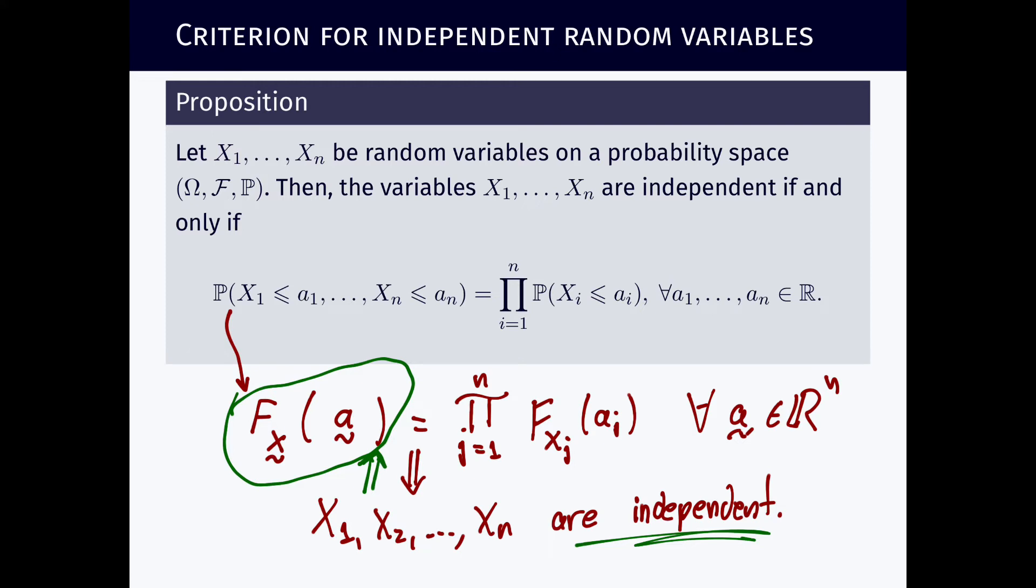Note that the expression for this function factorizes in order to conclude that they're independent, which is something which in principle was a much stronger property. And so again, it is this direction here which strikes me the most. It's this direction here.